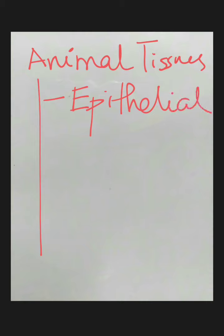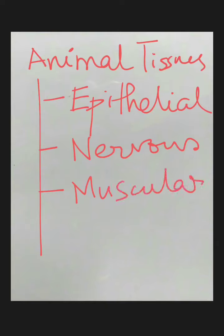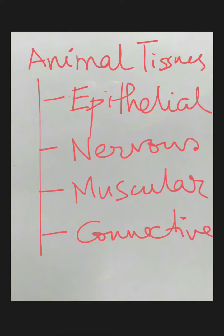Now let's talk about the different types of animal tissues. The first category is epithelial tissue. Next is nervous tissue. After that is muscular tissue. And then there is connective tissue. We will discuss each of these types in detail.